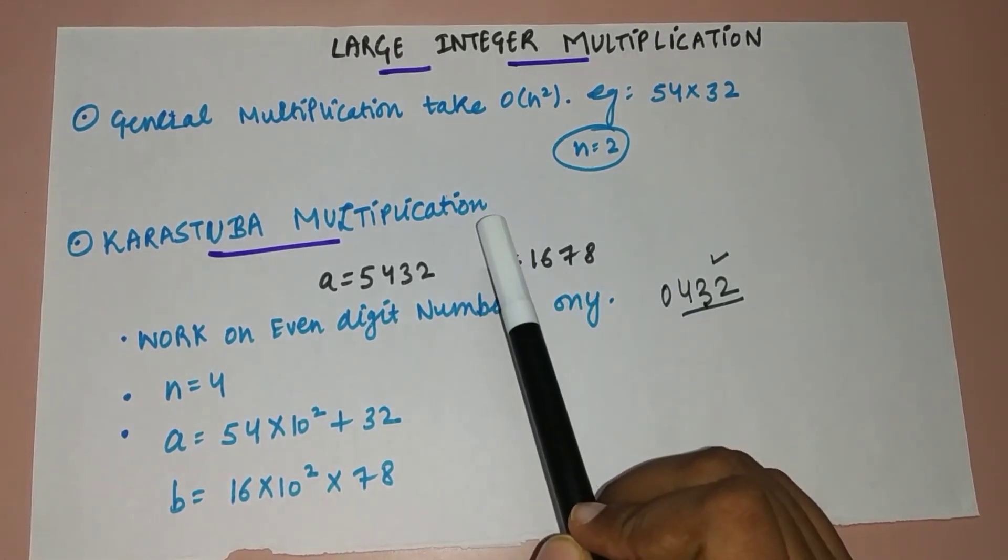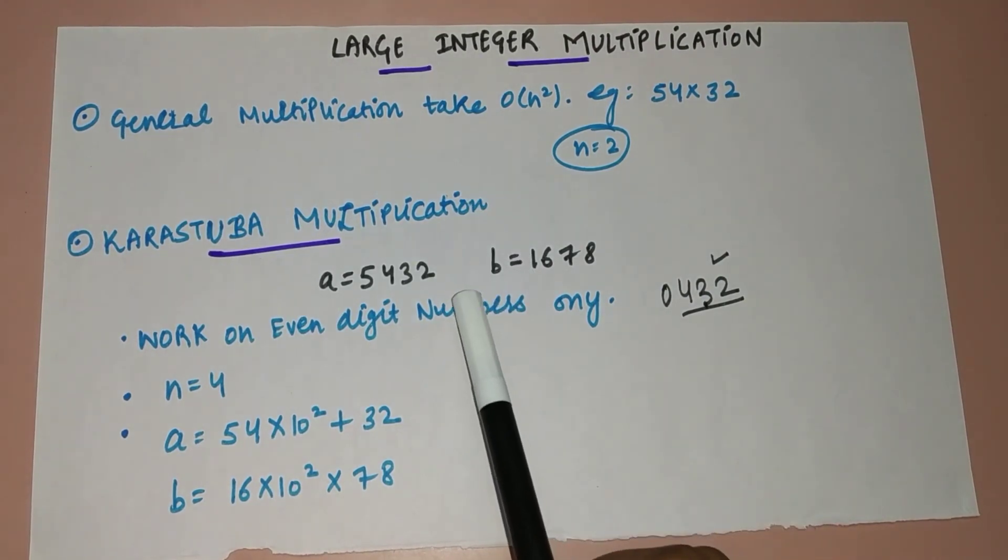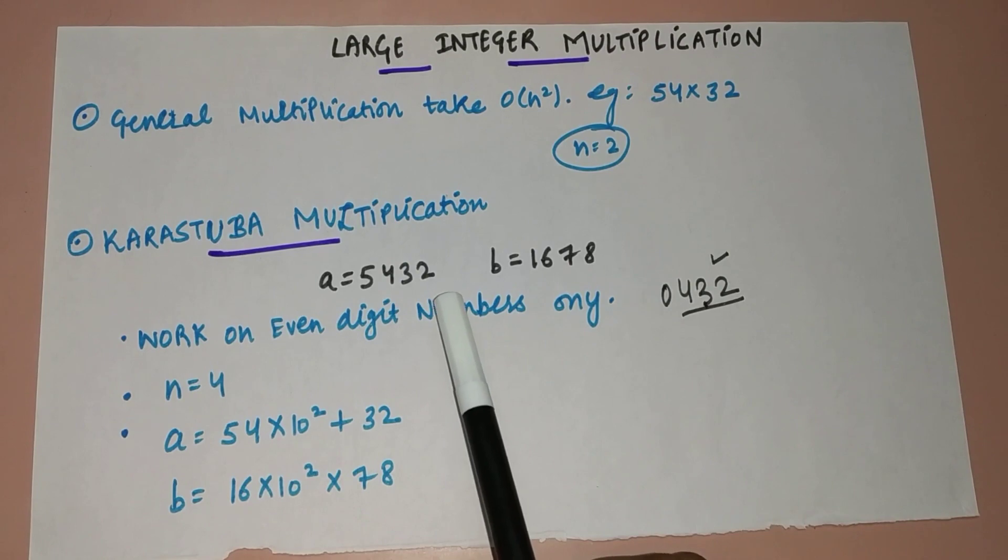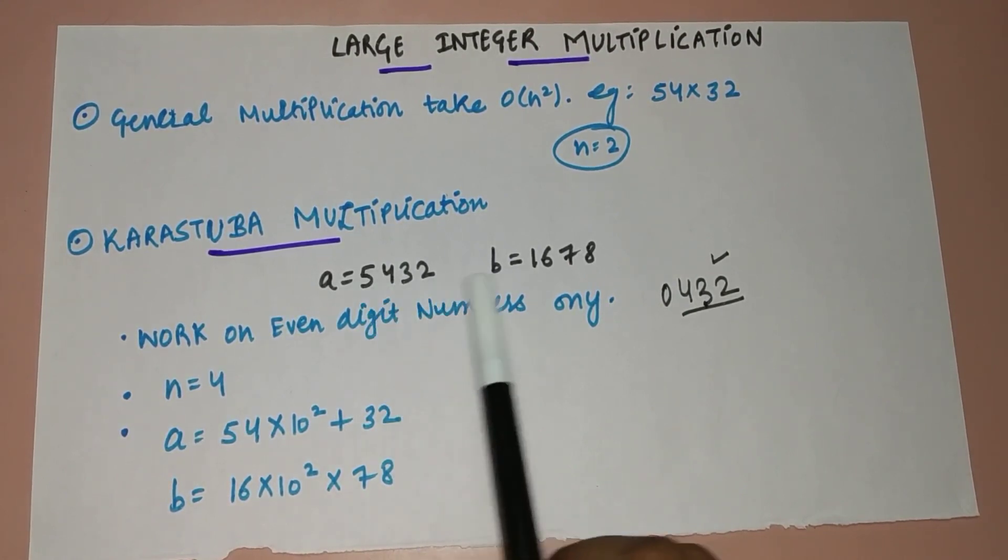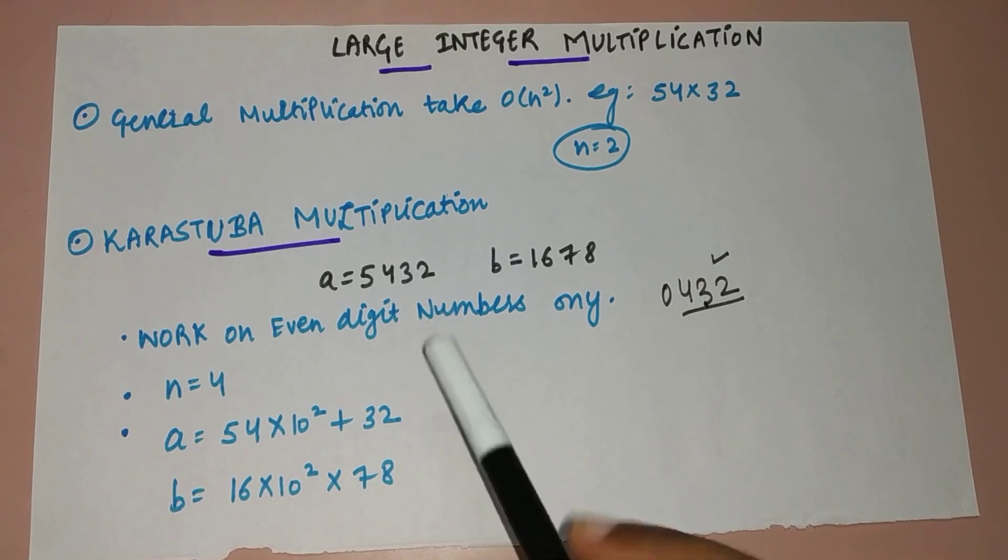I will explain what is Karatsuba multiplication with the help of an example. There are many steps in doing Karatsuba multiplication. Step number one, or rule number one: let's say we have these two numbers which we have to multiply. The rule number one says that it only works on even digit numbers, even number of digits only.